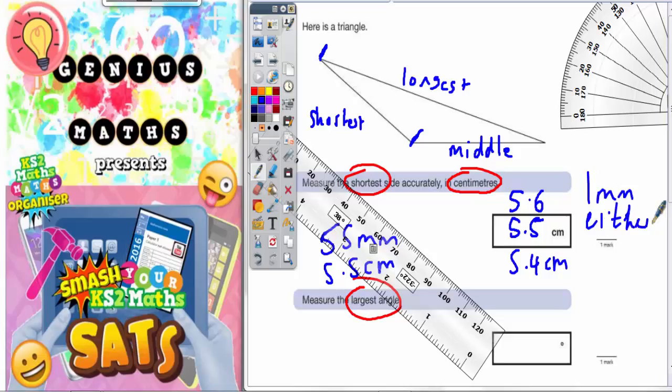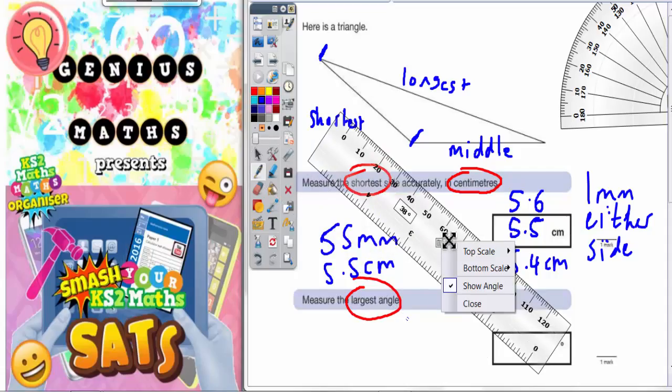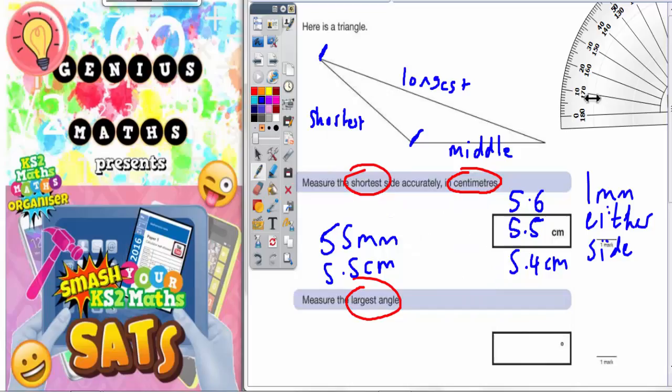It's really important not just to round it to the nearest whole centimeter. For example, if something was 6.8 centimeters and you put 7 centimeters, that would actually be two millimeters out and that would be marked wrong. So if it's 6.8, you can see that it's 6.8, you've got to put 6.8.